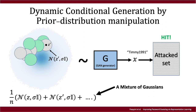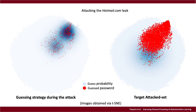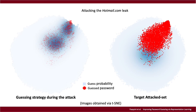In practice, the attack looks something like this. On the right, we have the whole hotmail.com leak mapped into the latent space via the encoder network. On the left, the animation describes how our guessing strategy evolves during the attack. Each red point is a guessed password, while the blue halo captures the density of the latent distribution. As you can see from the blue halo, the attack automatically focuses on the densest zone of the target space without any form of supervision.